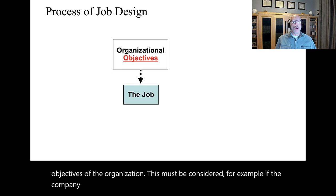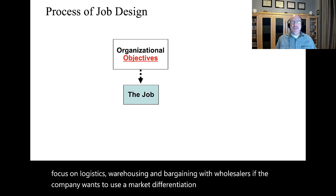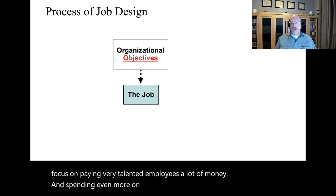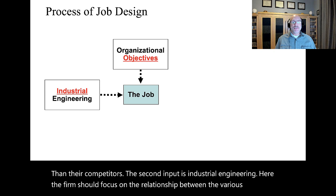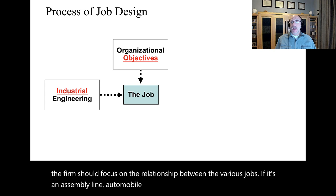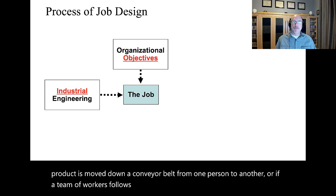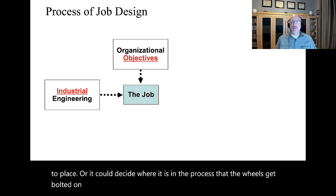For example, if the company wants to become the low-cost leader in retail sales, it should focus on logistics, warehousing, and bargaining with wholesalers. If the company wants to use a market differentiation strategy, then it should focus on paying very talented employees a lot of money and spending even more on research and development, R&D, than their competitors. The second input is industrial engineering. Here the firm should focus on the relationship between the various jobs. If it's an assembly line automobile manufacturer, it needs to decide if the product is moved down a conveyor belt from one person to another, or if a team of workers follows the product down the conveyor belt from place to place, or where the wheels get bolted on versus where the windshield gets installed. These are all designed to maximize efficiency.